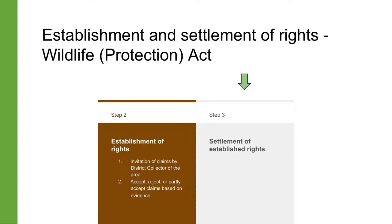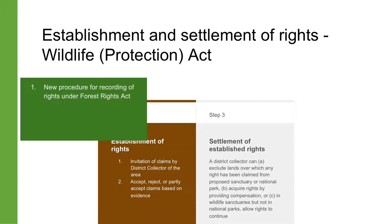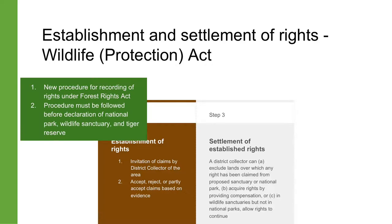Similarly, under the Wildlife Protection Act, claims may be accepted, rejected or partly accepted and partly rejected. The three options available to a district collector under the Wildlife Protection Act, if she accepts the existence of any rights, are to: A) exclude the lands over which that right has been claimed from the proposed sanctuary or national park; B) acquire those rights by providing compensation using a procedure similar to India's land acquisition law; or C) in the case of wildlife sanctuaries, but not national parks, allow those rights to continue within the limits of sanctuaries. Some of the powers of the collector to determine the rights of forest dwellers have been limited since 2006 when the Forest Rights Act expressly recognized some rights of forest dwellers. That law also set out a procedure for the recording of those rights, which also needs to be followed before declaring an area as a protected forest, reserve forest, national park, wildlife sanctuary, etc. under the Forest Act or under the Wildlife Protection Act.